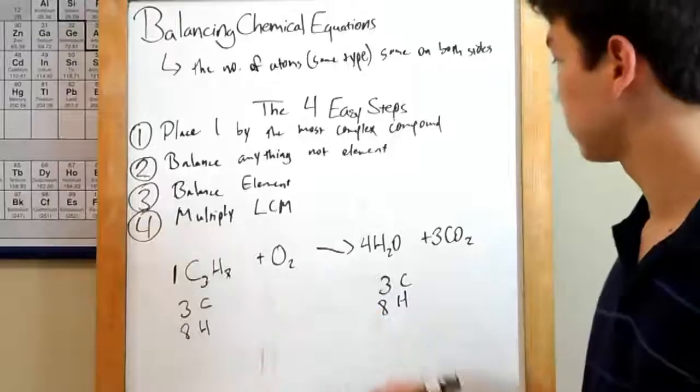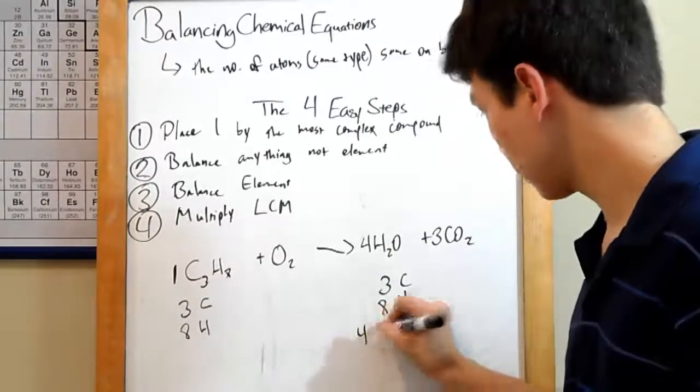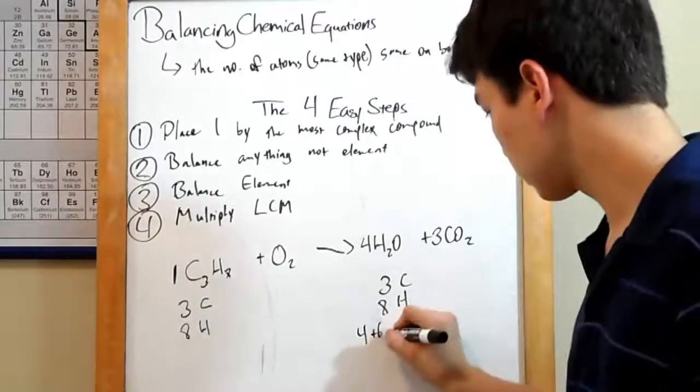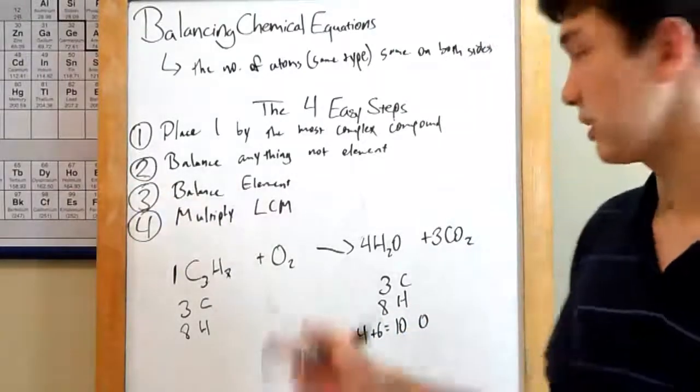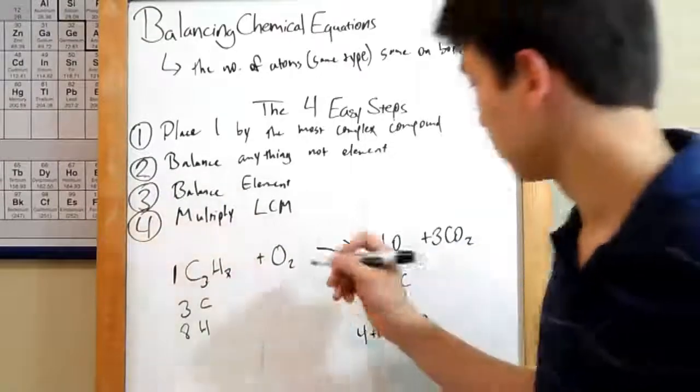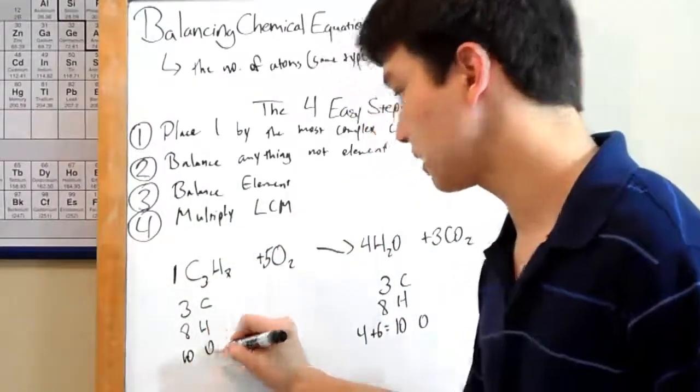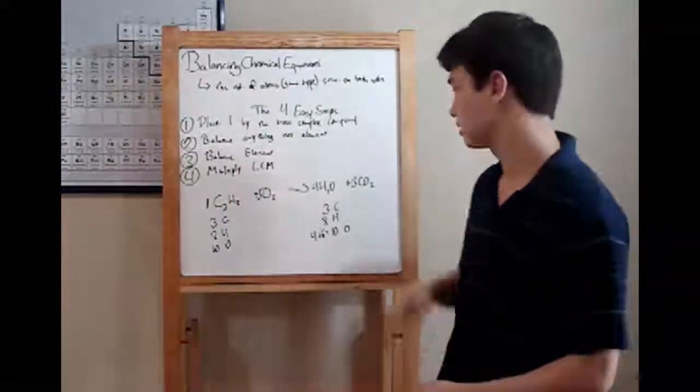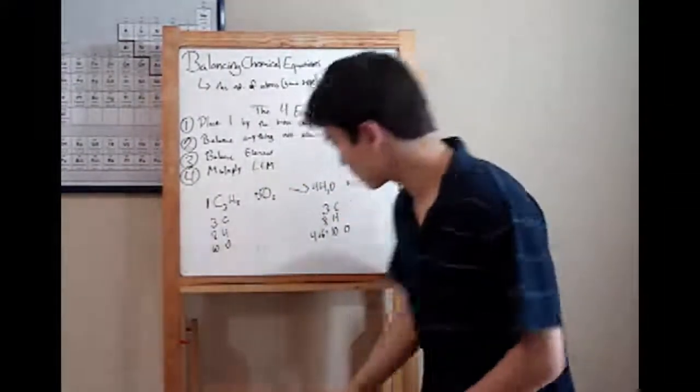That's oxygen. There are four times one is four, and three times two is six, for a total of ten oxygens on this side. We've only got two over here, but we know that five times two is ten. So, we can just put a five there. Ten oxygens on this side. Everything is balanced. Balanced chemical equation. Let's move on to something a little more tricky.